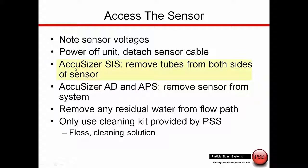With the AccuSizer SIS system, we can simply remove the tubes from both sides of the sensor to have access. When using the AccuSizer AD or APS, we'll need to remove the sensor completely from the system.